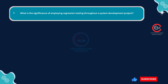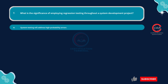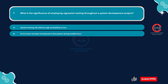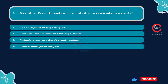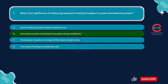Question 7: What is the significance of employing regression testing throughout a system development project? Option A: System testing will address high probability errors. Option B: Errors have not been introduced to the system during modification. Option C: The test plan is based on an analysis of the impact of past testing. Option D: The results of testing are statistically valid. The correct answer is Option B: Errors have not been introduced to the system during modification.